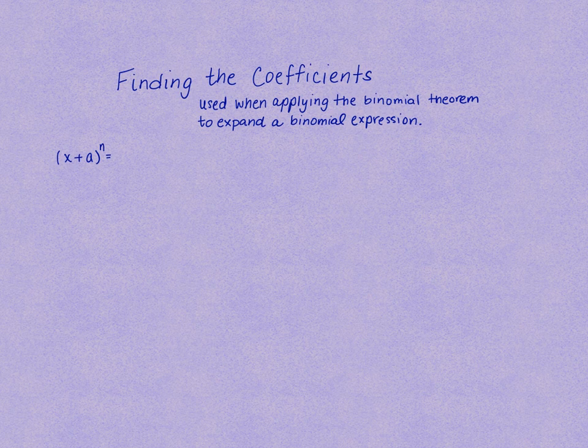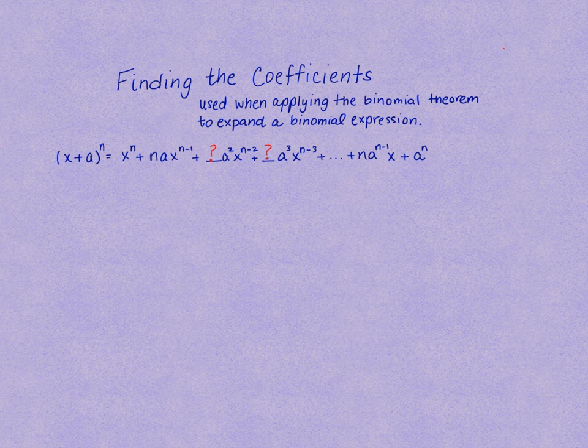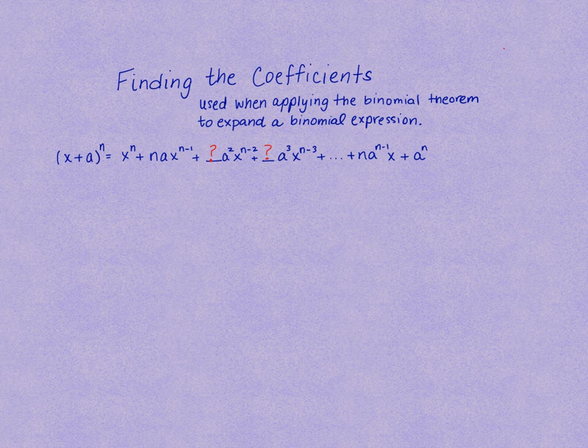Let's talk about how we find the coefficients used when applying the binomial theorem to expand a binomial expression. After the first and second terms, how do we know which numbers to plug in as the coefficients to the remaining terms before we get to the second to last and the last terms?